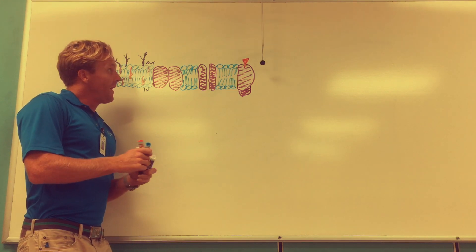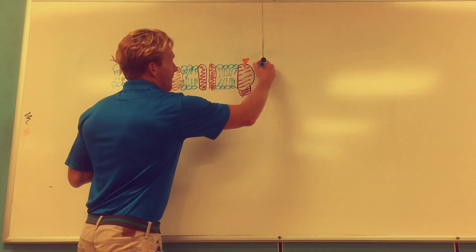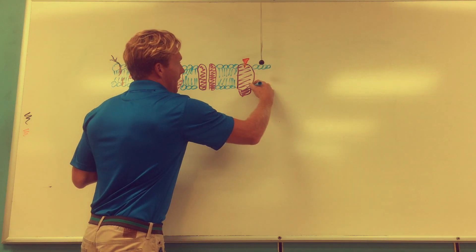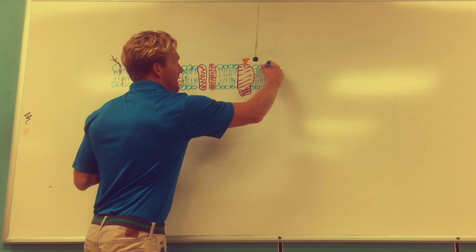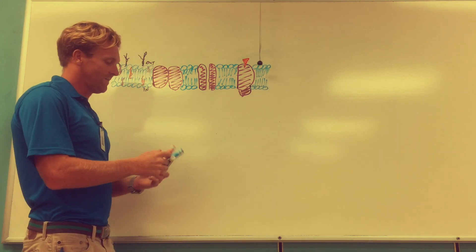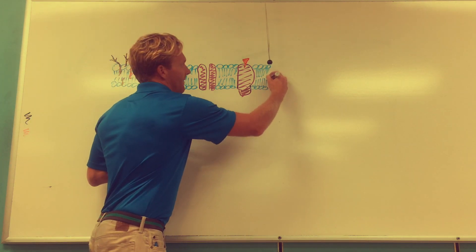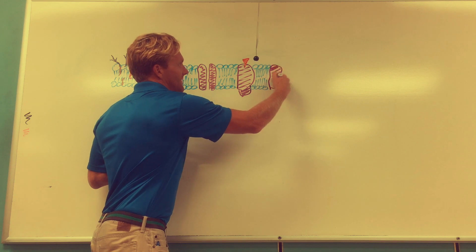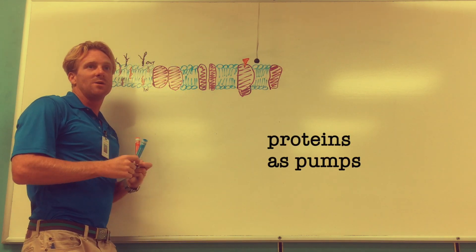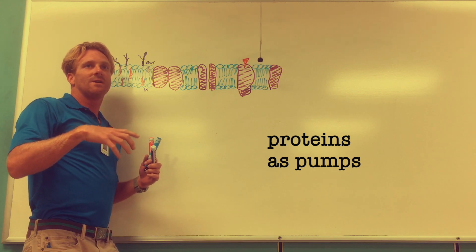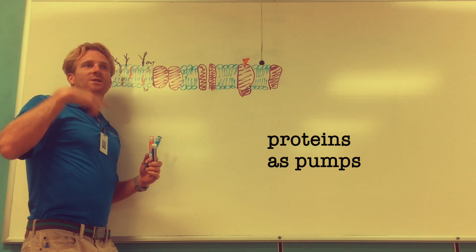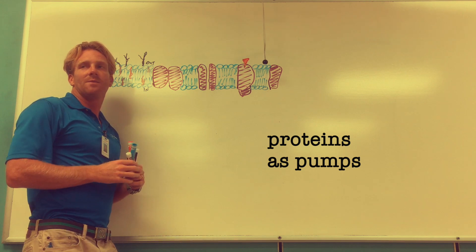In addition, you'll have proteins in the cell membrane that act as pumps. This is another way in which a protein can move things from one side of the cell to the other. A famous protein that does this is the sodium-potassium ATPase. It uses energy and when it uses this energy it changes shape and moves sodium and potassium across the membrane.